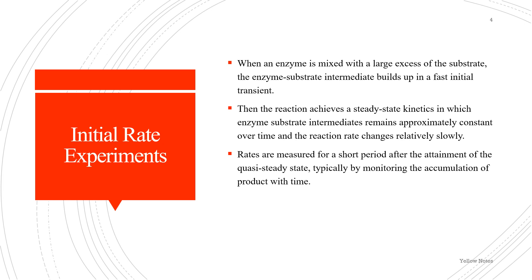Because the measurements are carried out for a very short period and because of the large excess of substrate that is present, the approximation that free substrate is approximately equal to the initial substrate can be made. This initial rate experiment is the simplest to perform and analyze, being relatively free from complications such as back reaction and enzyme degradation. It is therefore one of the most commonly used types of experiment in enzyme kinetics.